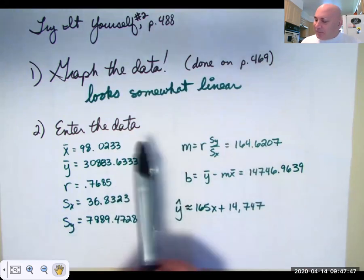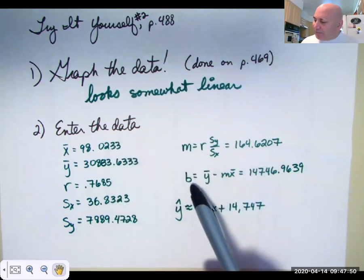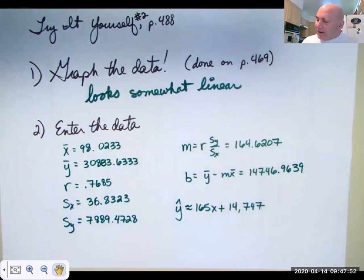But anyway, I wrote the numbers down and I have some m's and some b's here. So I now have a regression equation y hat equals 165x plus this, which means the predicted number of people at your home games would be 165 times the salaries plus this amount.